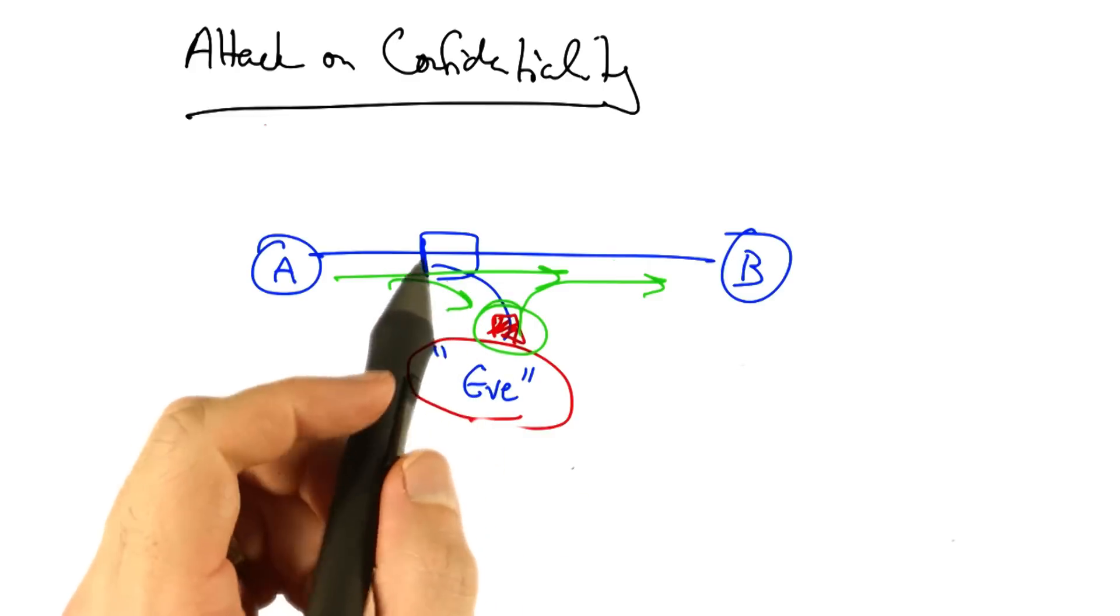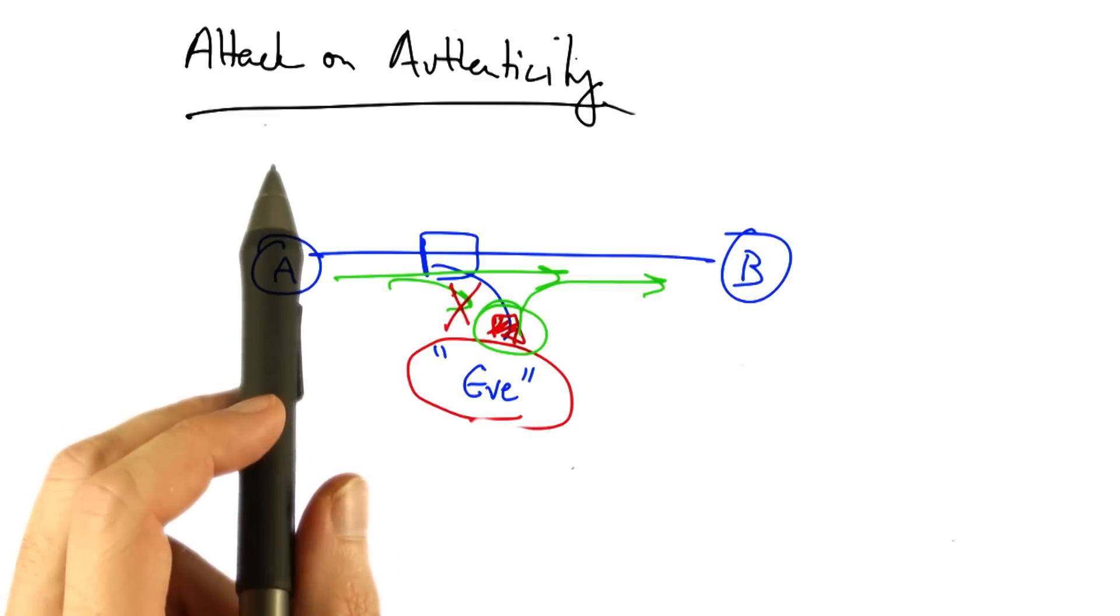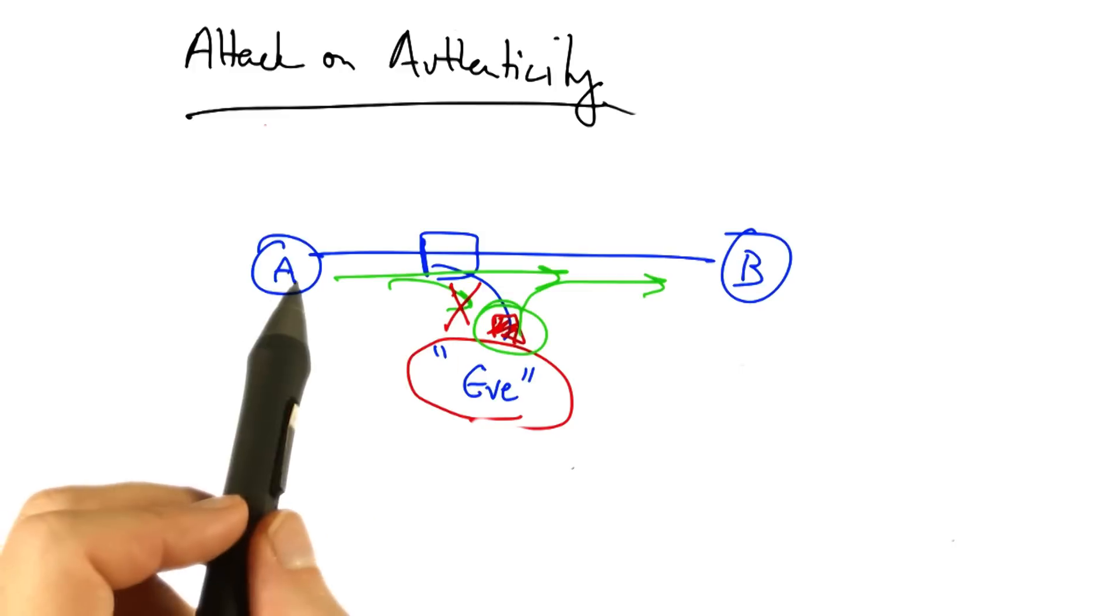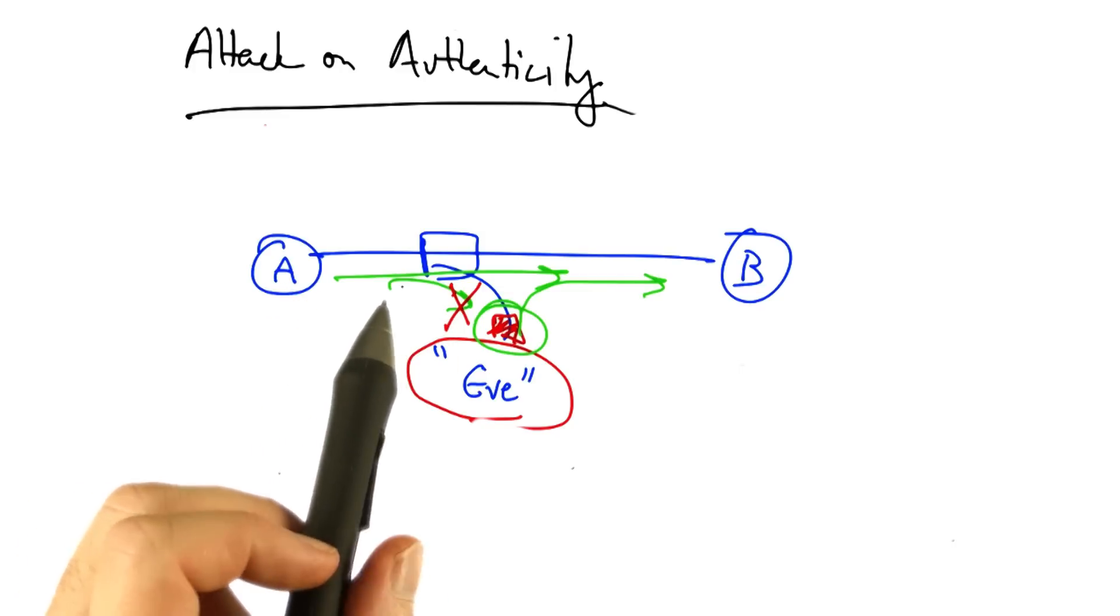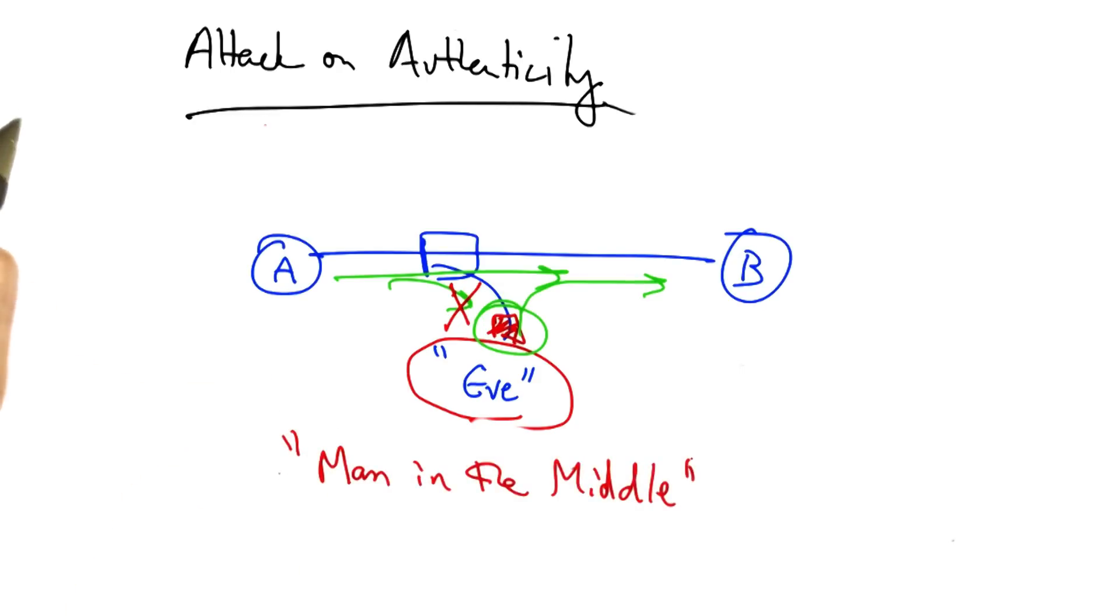If additionally Eve could suppress the original message, let's consider an attack on authenticity. If, in addition to being able to observe packets that traverse the network, Eve could re-inject packets after having modified them and suppress Alice's original message, then Eve could effectively impersonate Alice. This is sometimes called a man in the middle attack.